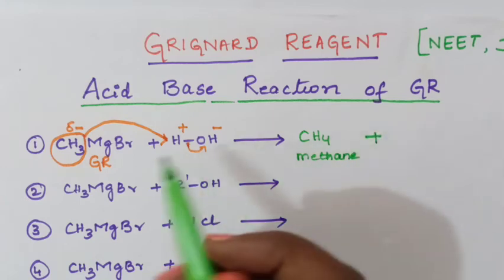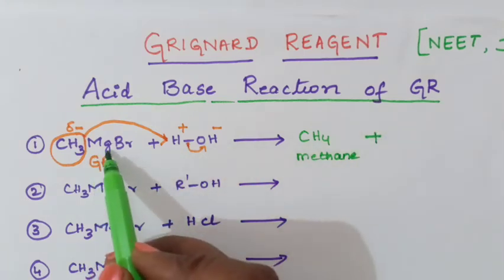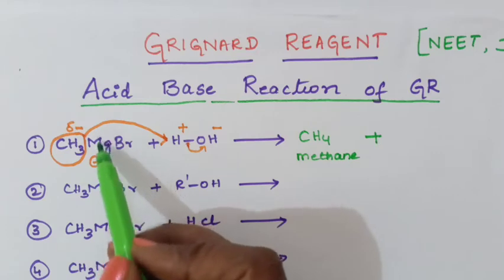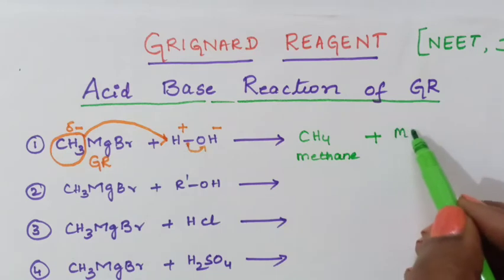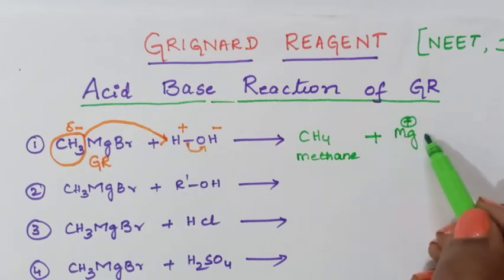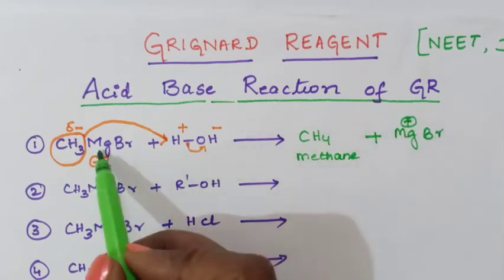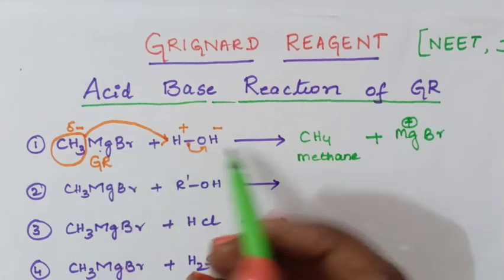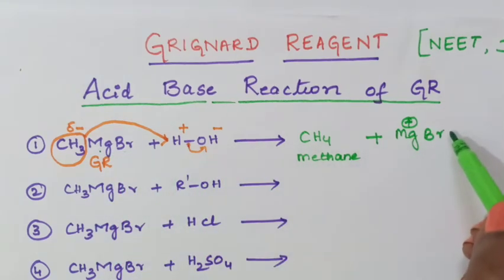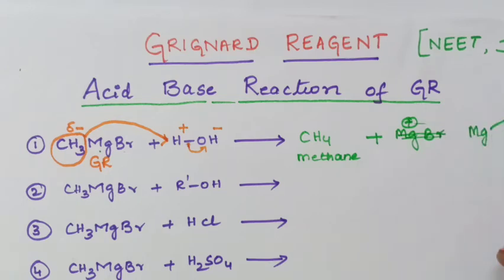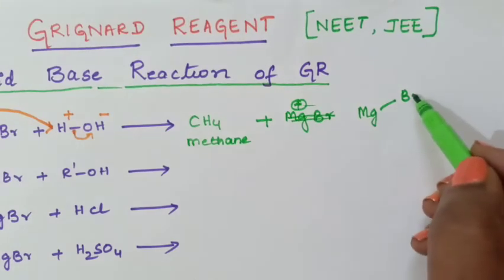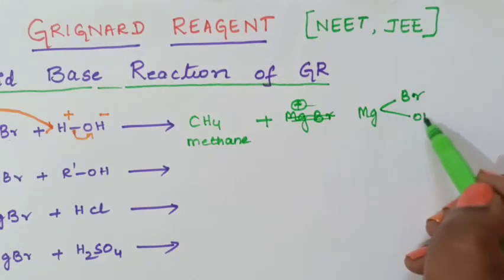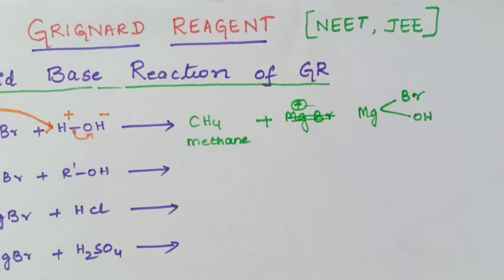The other product from this reaction is MgBr combined with OH minus, which can be written as MgBrOH. So this is the second product of the reaction between methyl magnesium bromide and water.